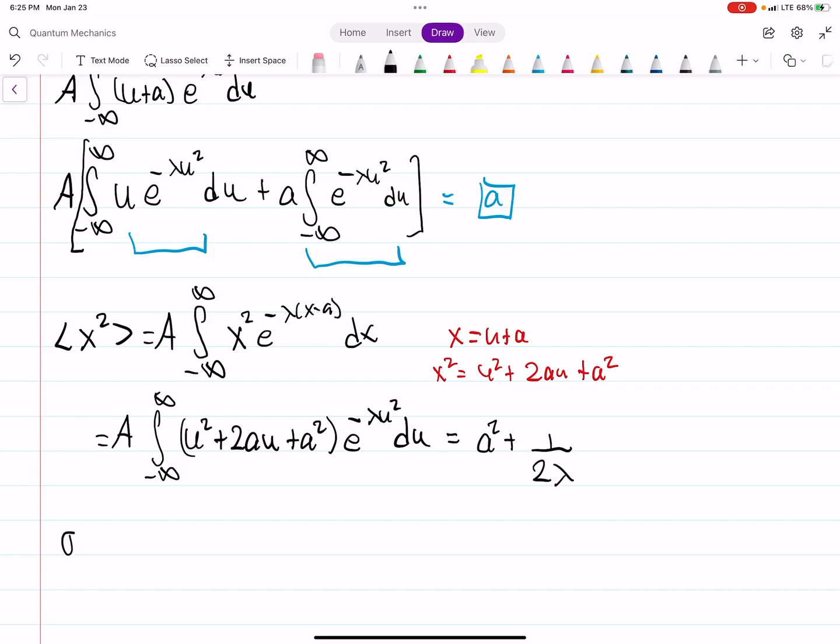And then to find sigma, sigma is x squared expectation value minus the expectation value of x squared. So that's just going to be A squared plus 1 over 2 lambda minus A squared. Obviously, 1 over 2 lambda is your sigma.